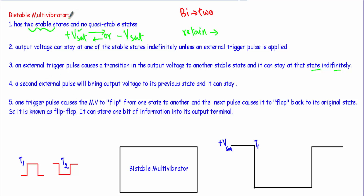This bistable multivibrator is also known as a flip-flop. One triggering pulse causes the multivibrator to flip from one state to another — from plus Vsat to minus Vsat — and the next pulse causes it to flop back to its original state. The second triggering pulse restores the plus Vsat level. This is why it is known as a flip-flop. A flip-flop is a circuit which stores one bit at a time, and the output of this bistable multivibrator will be stable at either plus Vsat or minus Vsat, meaning it can store one bit of information.